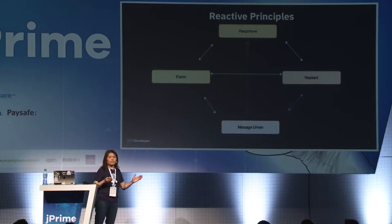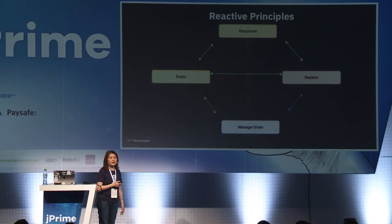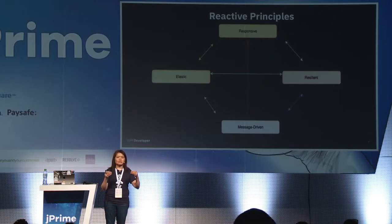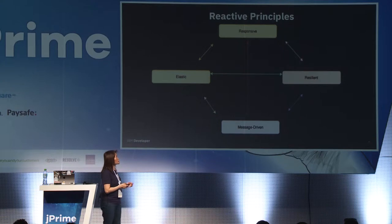When we talk about reactive systems, we look at four basic core principles. First, systems need to be very responsive. By responsive, it means that when requests come in, the response needs to come back in a very timely manner — you don't wait for a long time.